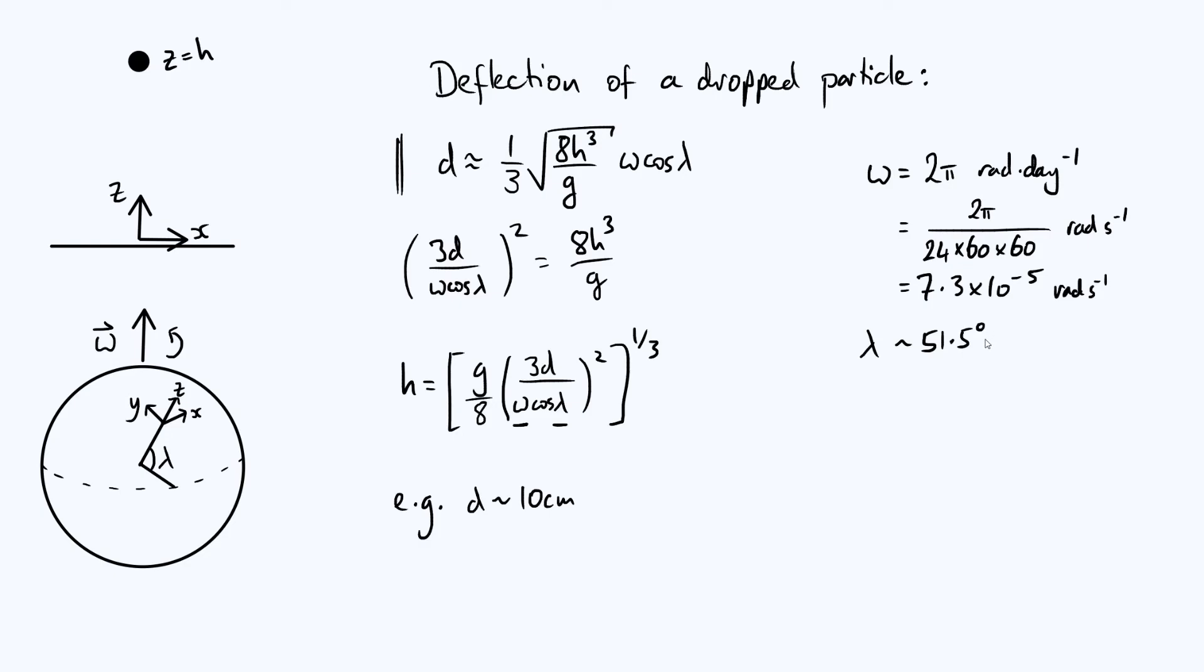And if we put this omega and lambda into this equation, along with d is around 10 centimeters, 0.1 meters, we find that h comes out to be around 380 meters.